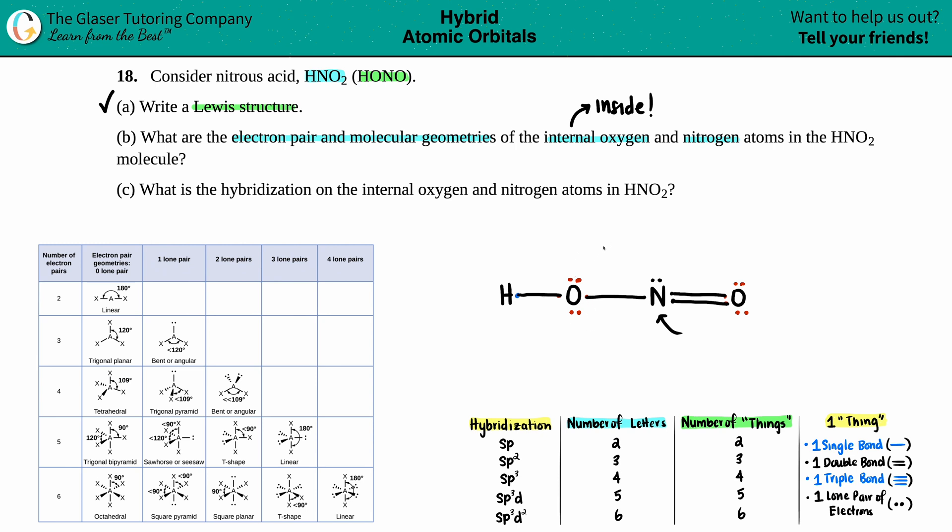Do you see how this oxygen would be the external oxygen because it's on the end? This one is the internal one. So those are your two elements that you have to do letter B towards. So we just have to find the electron pair and the molecular geometry. So let's just set this up. Electron pair and molecular geometry. All right.